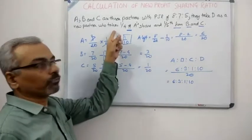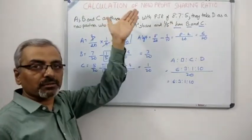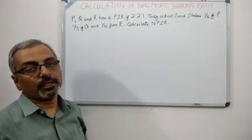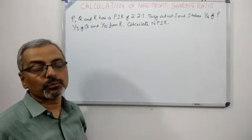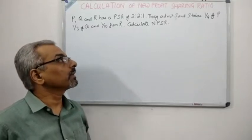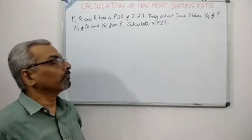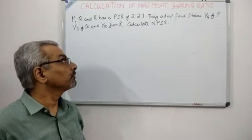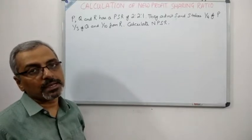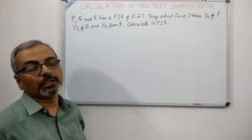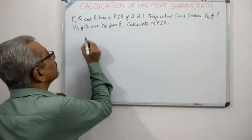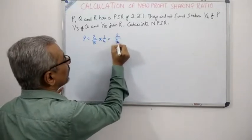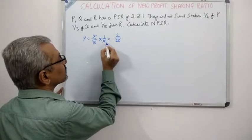Now let us look at another sum where we have two 'of's and one 'from'. There are three partners P, Q, and R with PSR of 2:2:1. They have admitted S as a new partner, and S has taken one fourth 'of' P and one third 'of' Q — two multiplications — and one tenth 'from' R — one direct subtraction. P's original share is 2/5; one fourth of that is 2/5 × 1/4 = 2/20 = 1/10.